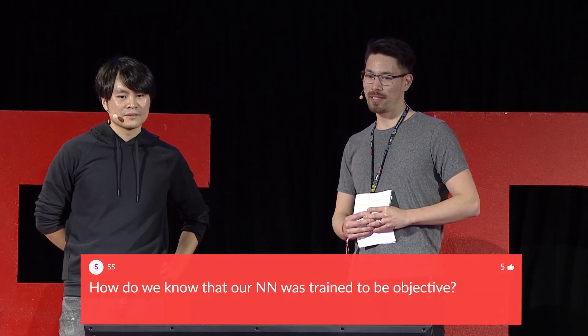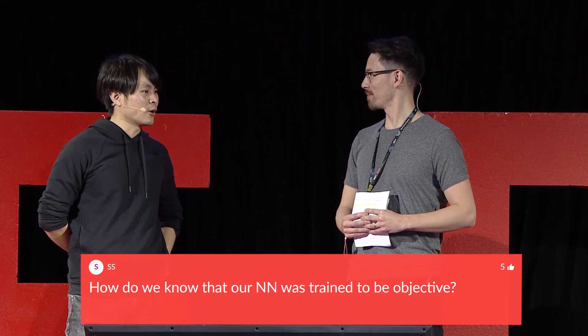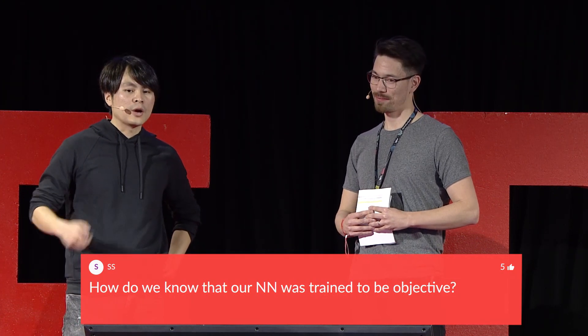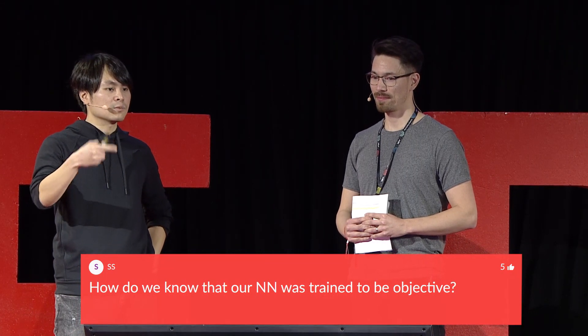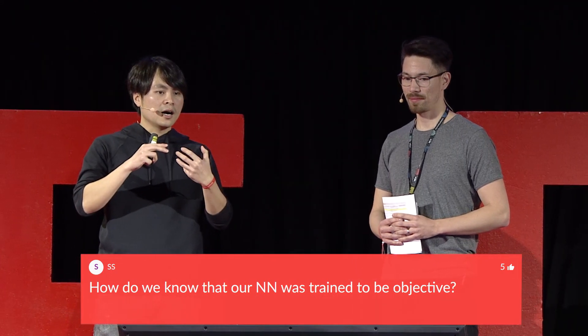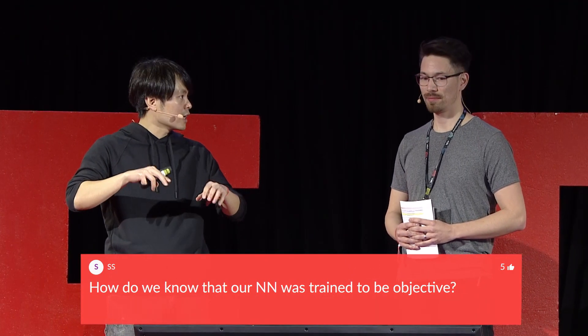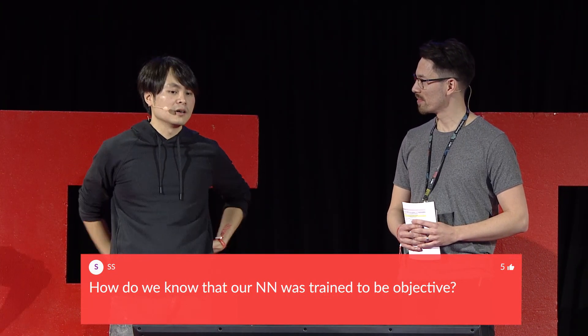Q: How do we know the neural network was trained to be objective? A: It shouldn't be objective — beauty is subjective. We train the model on the biases of the people who labeled the data. You can also incorporate extrinsic feedback from users, like click data, as a feature in the next model — combining intrinsic and extrinsic feedback.